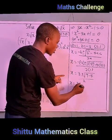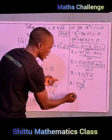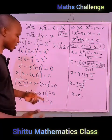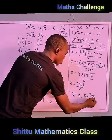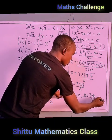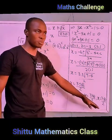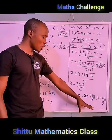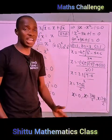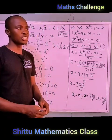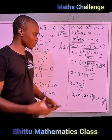So our solution set is: x = 0, x = (3 + √5)/2, and x = (3 − √5)/2. These are the three solutions to the problem. I prefer to leave the answer in surd form to maintain accuracy, since using decimal form requires approximation and reduces the precision of the solution.